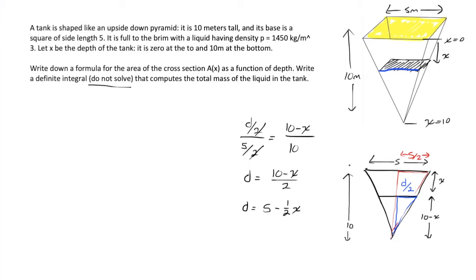This is a function of the side length as a function of the depth, x. If we have the side length of a square, it shouldn't be too hard to find the area of a square. The cross-sectional area, A(x), the area of a square is side squared. In terms of our variable, we have d squared. But d is 5 minus 1 half x. So A(x) is equal to 5 minus 1 half x squared.